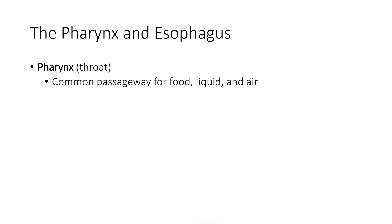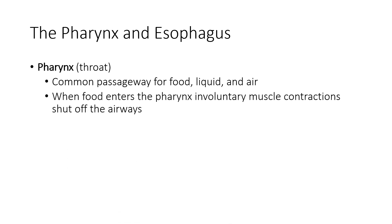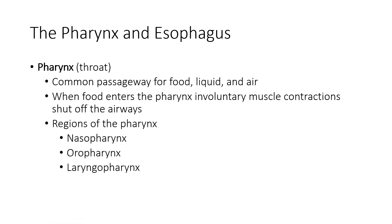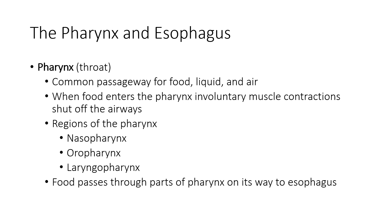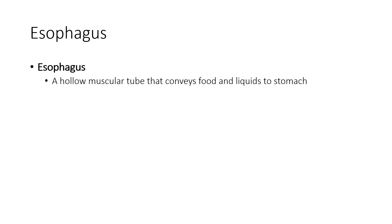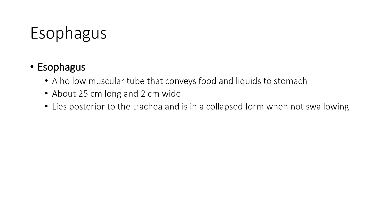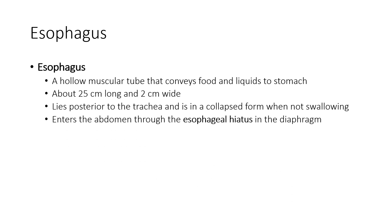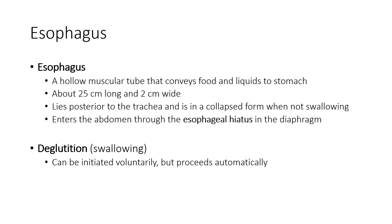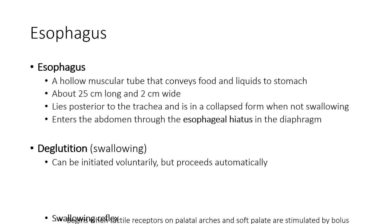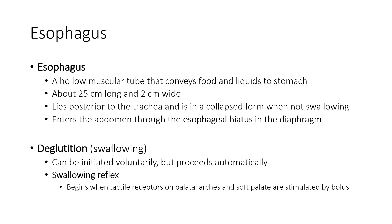The pharynx is a common passageway for food, liquid and air. When food enters the pharynx, involuntary muscle contraction shuts off the airways. The regions include the nasopharynx, oropharynx and laryngopharynx. Food passes through the pharynx on its way to the esophagus. The esophagus is a hollow muscular tube that conveys food and liquid to the stomach — about 25 cm long and 2 cm wide. It lies posterior to the trachea and is in a collapsed form when not swallowing. It enters the abdomen through the esophageal hiatus of the diaphragm. The medical term for swallowing is deglutition, which can be initiated voluntarily but proceeds automatically.